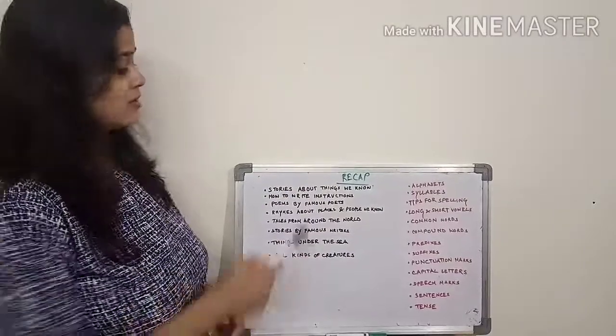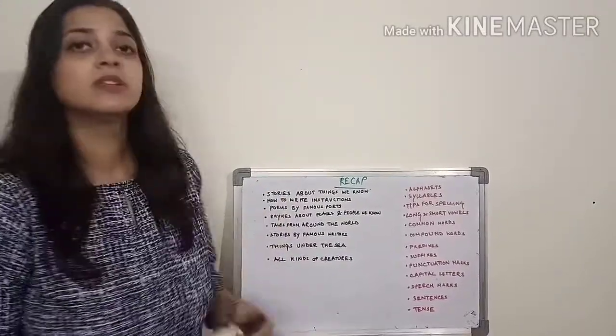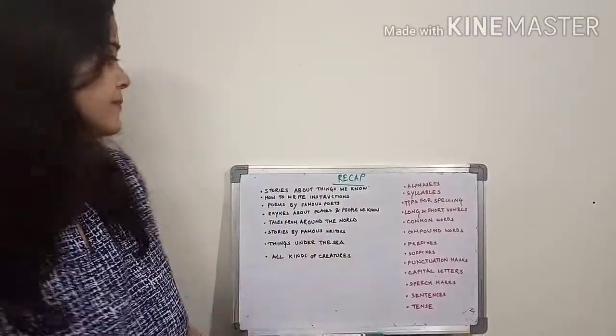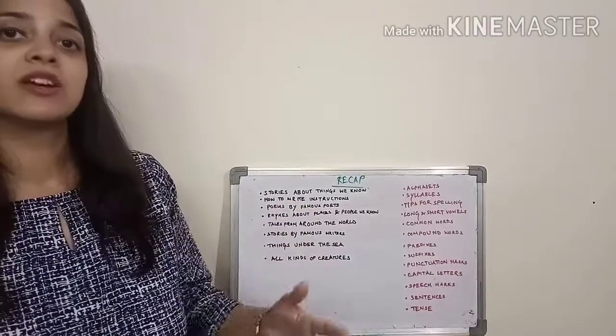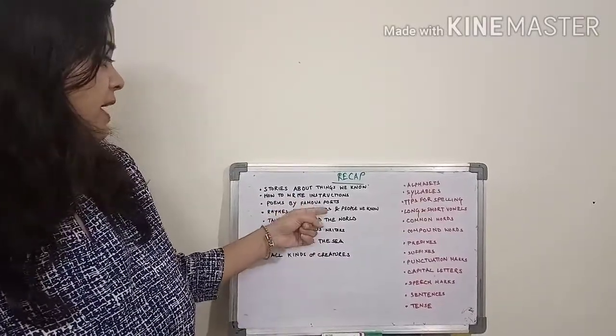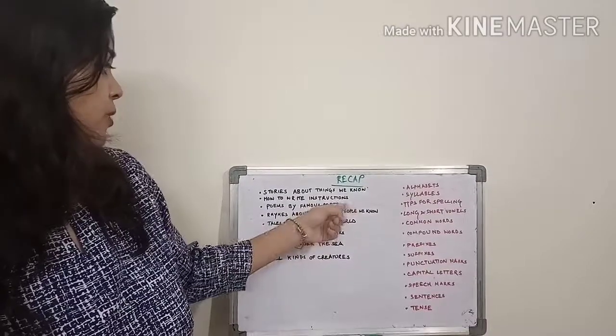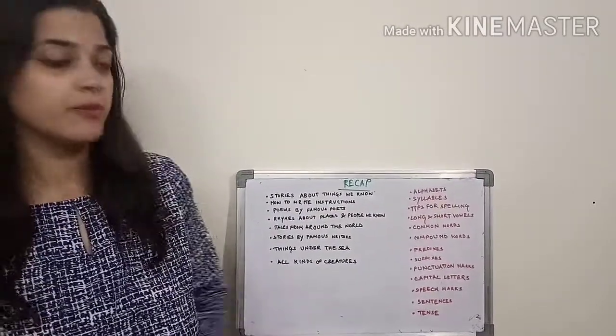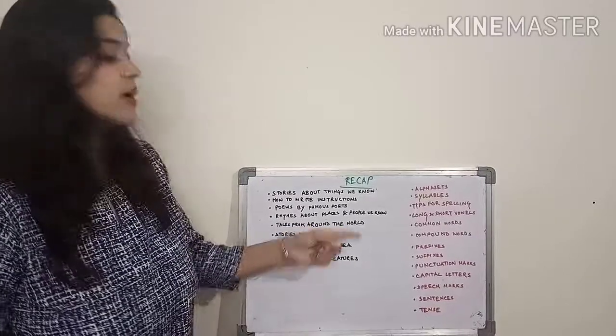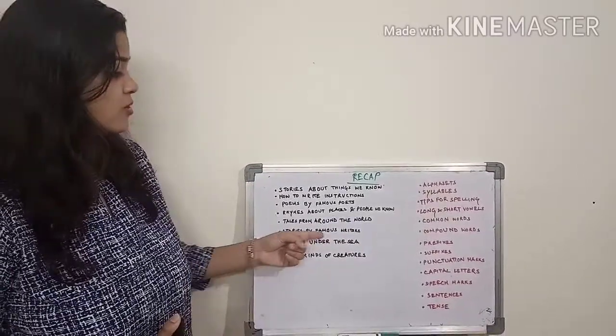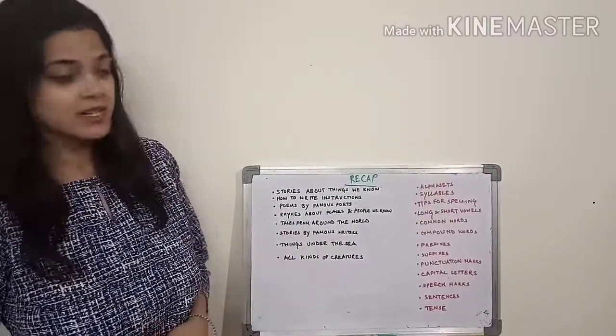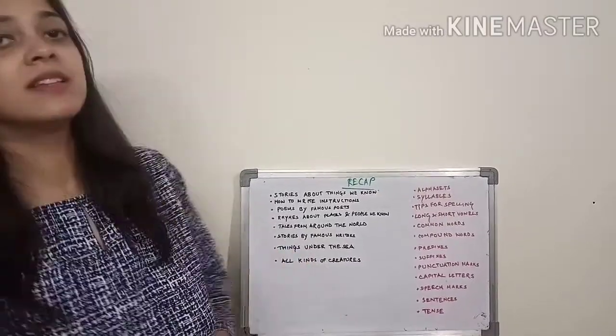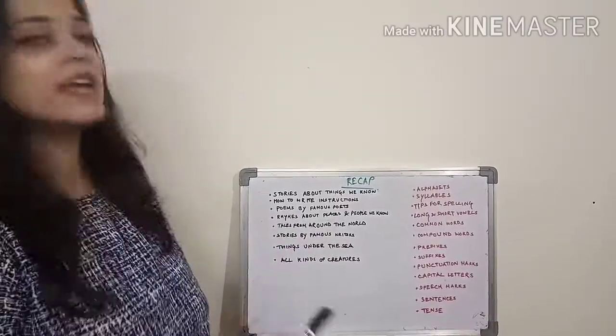In your last class, you have learnt about stories about the things you know around you, how to write instructions, poems by famous poets, rhymes about places and people we know, tales from around the world, stories by famous writers, things under the sea, all kinds of creatures.